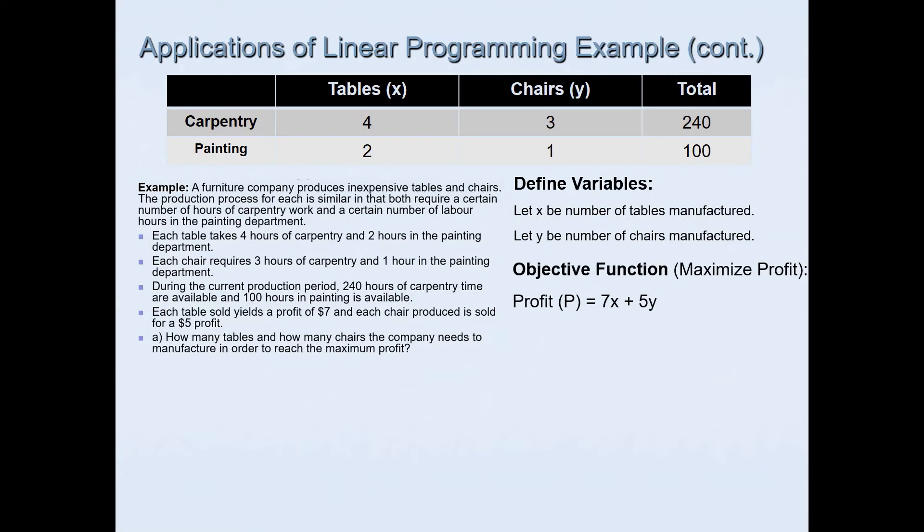In this question we want to maximize profit. Each table sold yields a profit of seven dollars, so it's 7x. x is the variable that denotes tables. So 7x plus 5y is very easy to form this objective function.